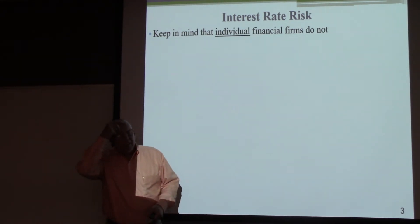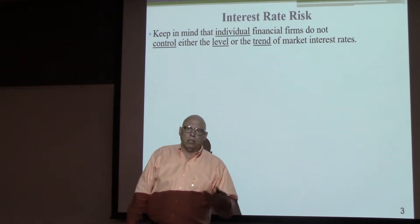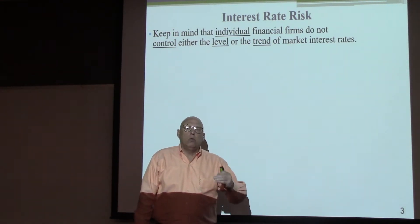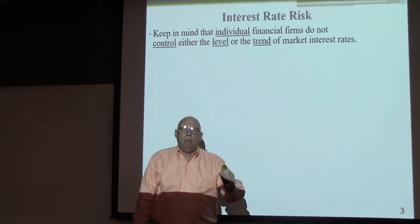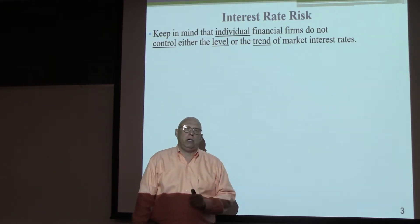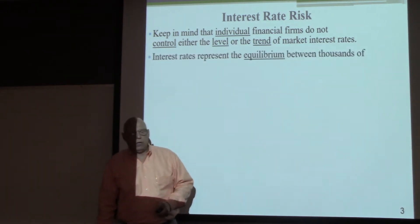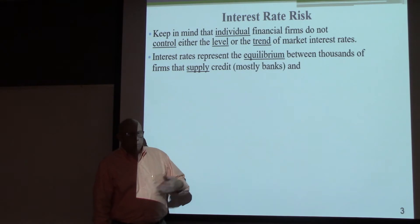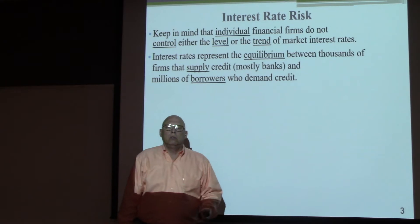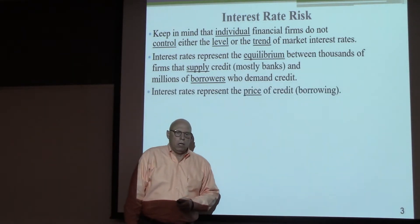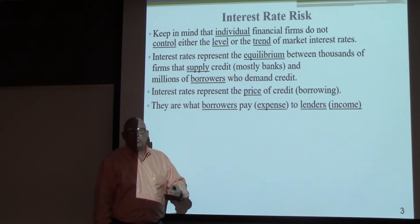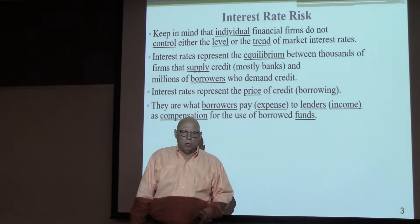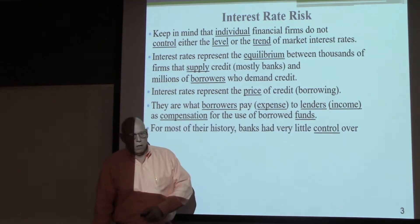Keep in mind that individual financial firms do not control either the level or the trend of market interest rates — banks have to deal with the environment they encounter. Banks can't change interest rates; they must accept them. Interest rates represent the equilibrium between thousands of firms that supply credit, mostly banks, and millions of borrowers demanding credit. They are the price of borrowing — an expense to borrowers and income to lenders.